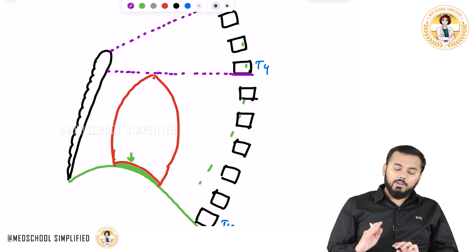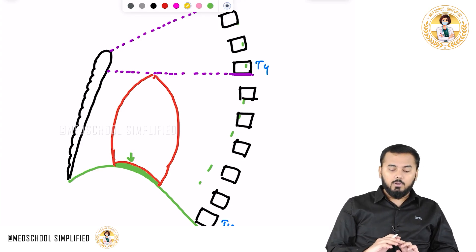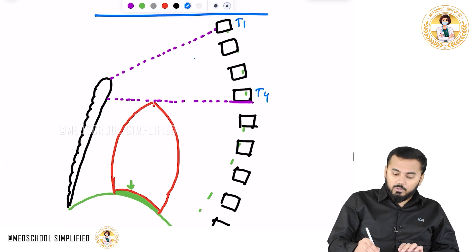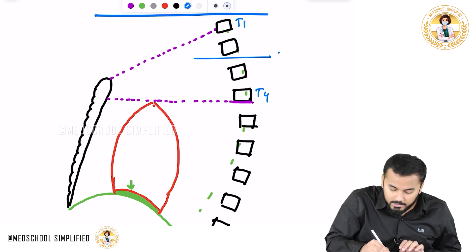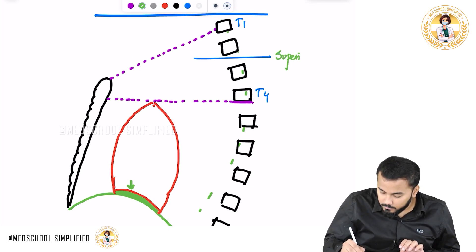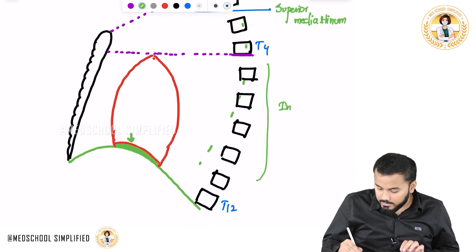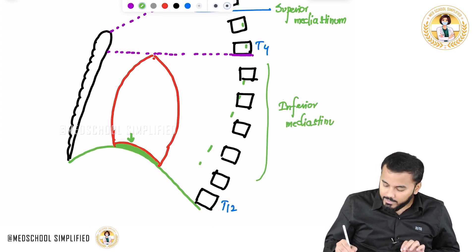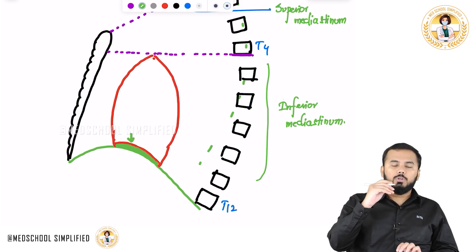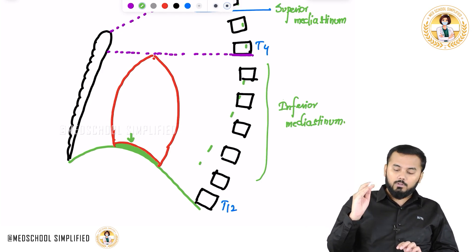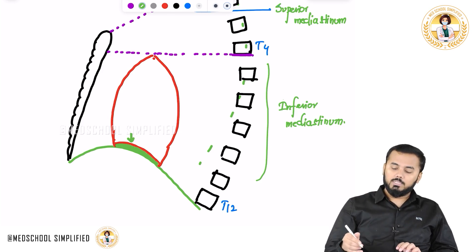In this way I have divided the mediastinum into two parts. The mediastinum seen on top is called the superior mediastinum, and the entire lower part is called the inferior mediastinum. Think of them as two floors: the top floor is the superior mediastinum and the lower floor is the inferior mediastinum.